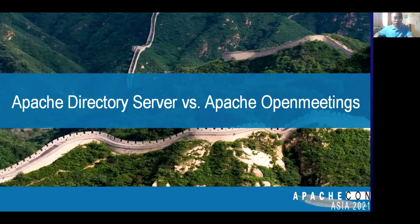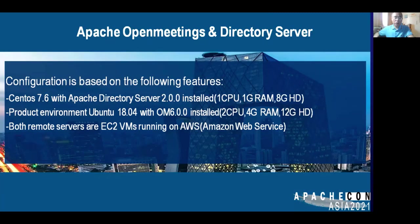Now for Apache Directory Server versus Apache OpenMeetings integration. I installed Apache Directory Server 2.0 on CentOS 7 with one CPU, 1GB RAM, and 8GB hard disk. I also installed OM6 on Ubuntu 18.04 with two CPUs, 4GB RAM, and 12GB hard disk as a production environment. Both remote servers are EC2 virtual machines running on Amazon Web Services.